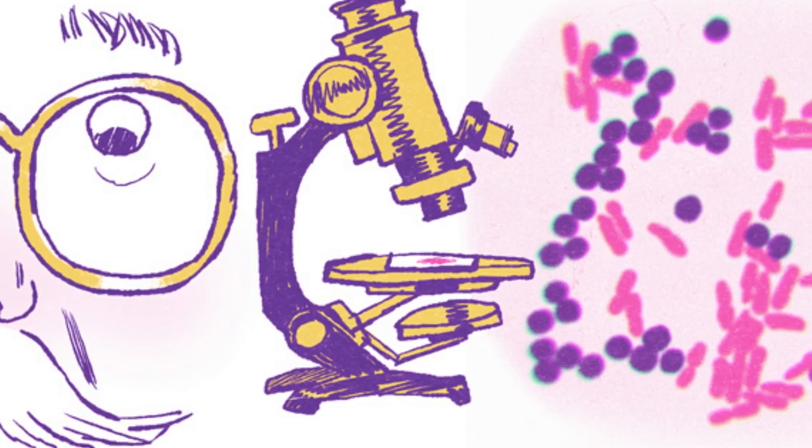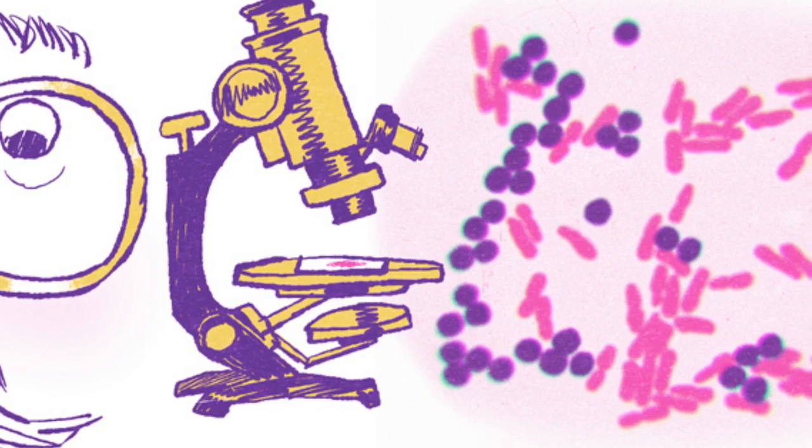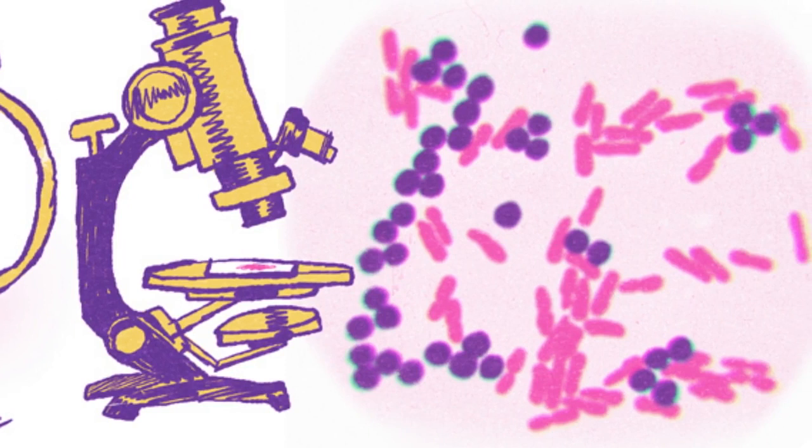Gram published his findings in a scholarly journal in 1884, and the terms Gram-positive and Gram-negative came to be coined.